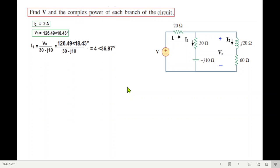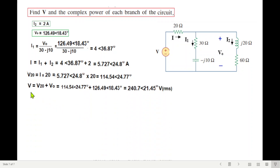So now we can calculate I1. I1 is V0 divided by now this impedance. This is I1. And now we can find total current. I is I1 plus I2. So this is the total current. We can also find the voltage drop here. V20 is I into 20. So this is V20 voltage. And now we know the voltage drop here and the voltage drop here. Therefore we can find the total voltage. V is V20 plus V0, adding the two voltages. This is V. And now we have all the information to calculate the power.